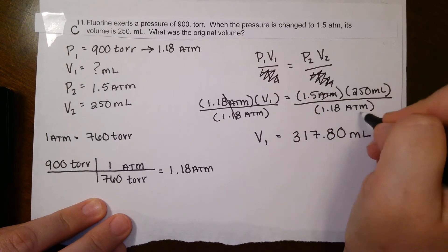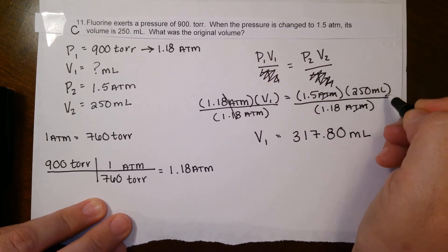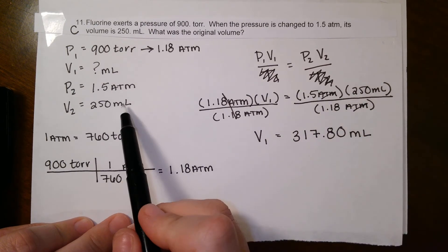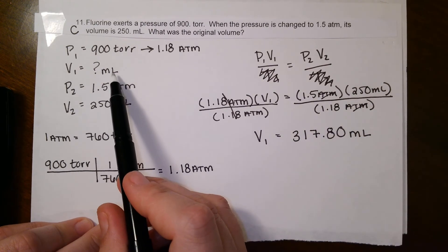Keep in mind, atm cancels top to bottom. The only unit you're left with is milliliters. The other way you know that your answer is milliliters is because you plugged in milliliters, so you have to come out as milliliters.